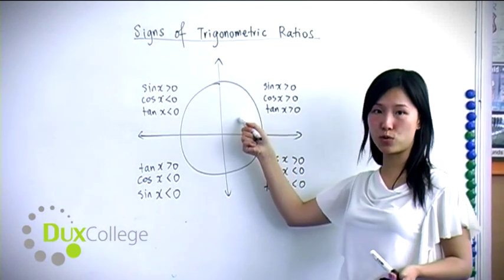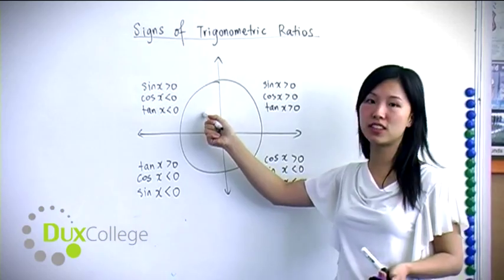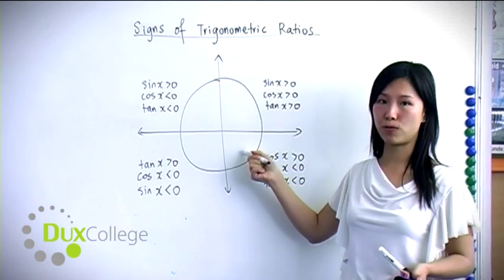So this is the first quadrant, the second quadrant, the third quadrant, and the fourth quadrant.